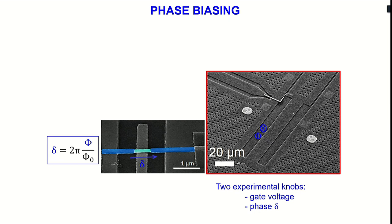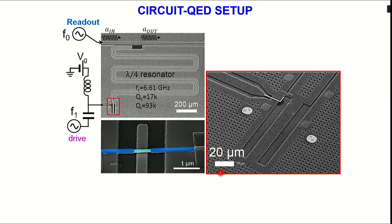In order to probe such a circuit, we need to be able to phase-bias the junction. This is obtained by having the weak link at the end of a resonator — this is the central conductor of the coplanar waveguide resonator — so we are making a loop here, and by applying a flux across this loop, it's possible to phase-bias the weak link. This is a lambda-over-4 resonator with a resonant frequency of 6.6 gigahertz and a coupling quality factor of 17,000. This is probed by coupling the resonator to a bus and sending a microwave in and looking at what comes out.